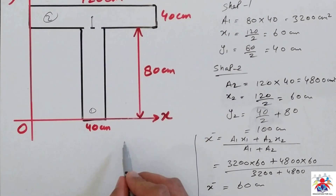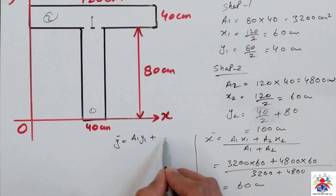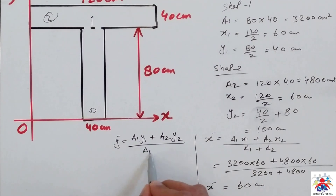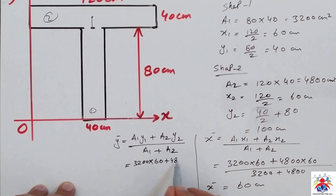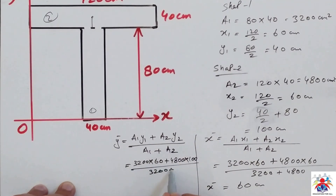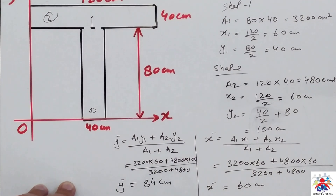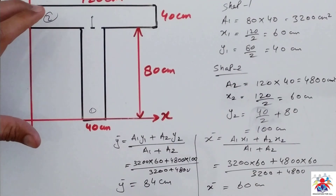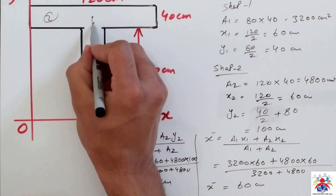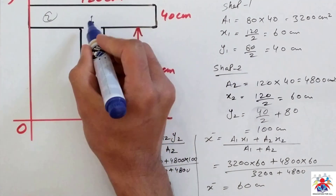Now we calculate y-bar. Y-bar equals (A1·y1 + A2·y2) divided by (A1 + A2). The result gives us y-bar equal to 84 centimeters. So if we travel from the bottom along the y-axis by 84 centimeters, we reach our center of gravity point, which is somewhere here on the section.